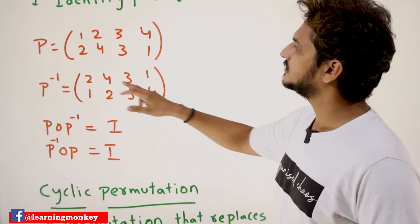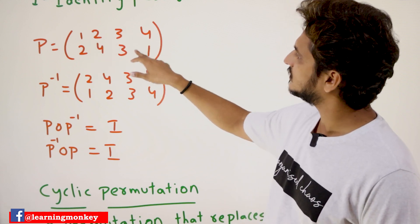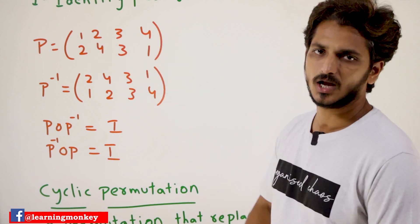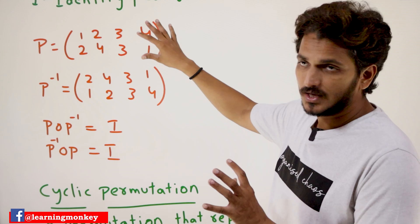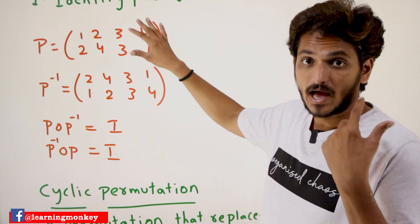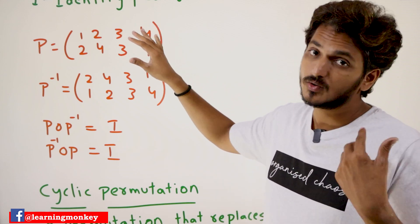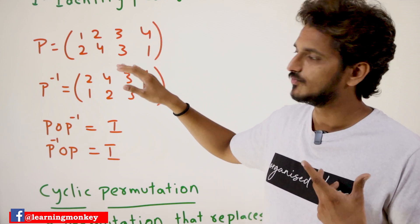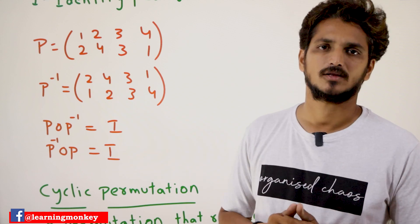Let us take P equal to the permutation: 1→2, 2→4, 4→3, 3→4, 4→1. For this P, we are going to find P-inverse.